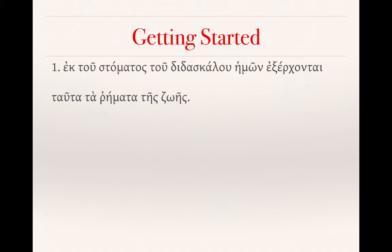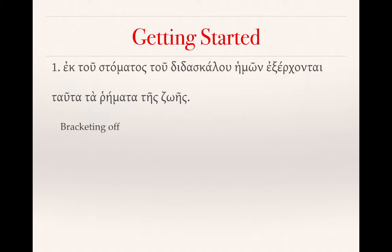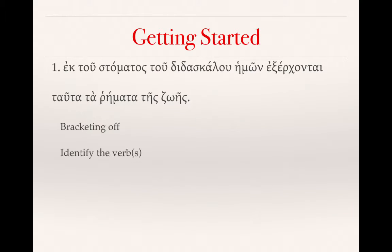Let's get started with the first practice and review exercise. As I have recommended, I would begin by bracketing off prepositional phrases and genitive phrases. So ek tou stomatos tou didaskalou hemon is one large phrase that we can bracket off. Ek tou stomatos is a prepositional phrase, and then tou didaskalou modifies stomatos and hemon modifies didaskalou. That leaves us with exerkhontai, tauta, ta remata, tes zoes. And of course, tes zoes is a genitive phrase modifying ta remata. With those parts bracketed off, let's identify the verb — we only have one verb and it's exerkhontai.